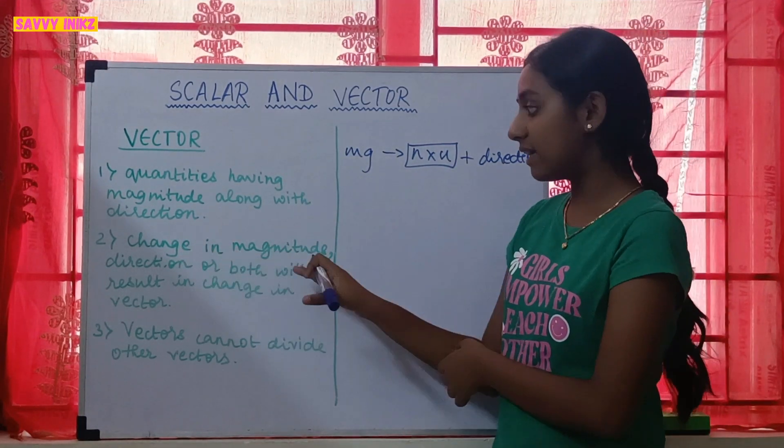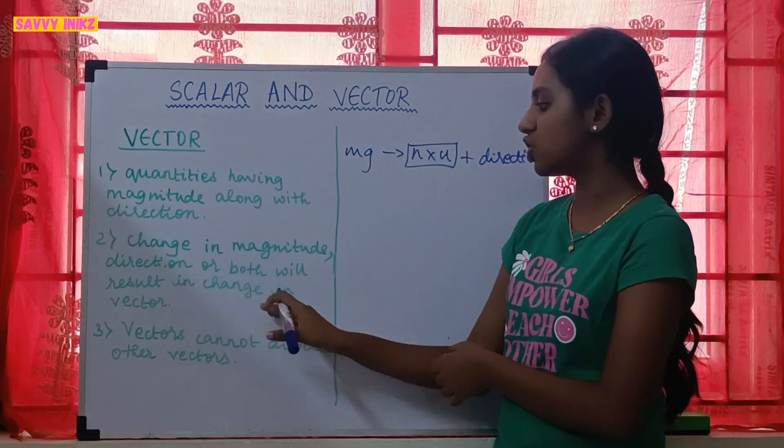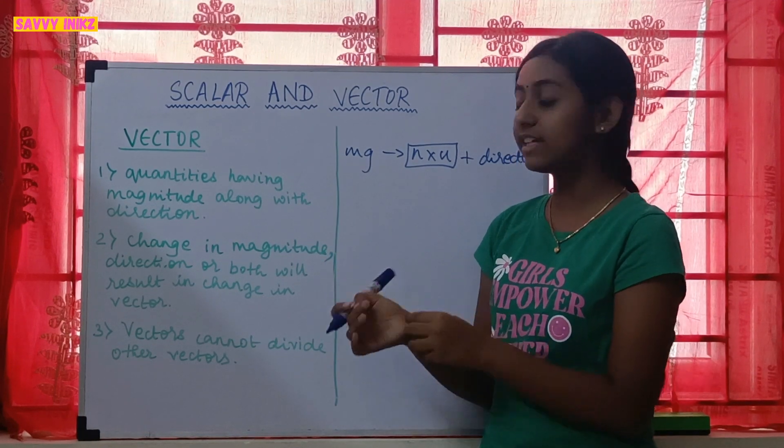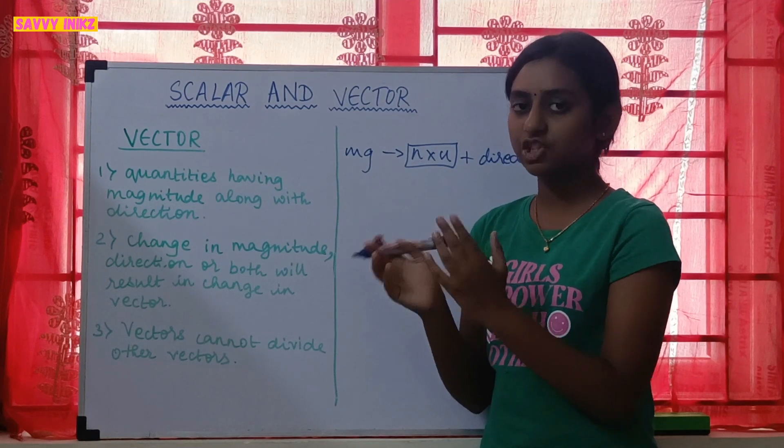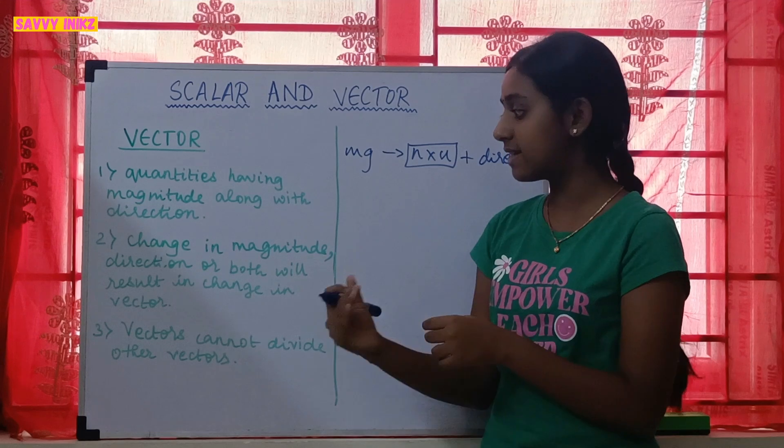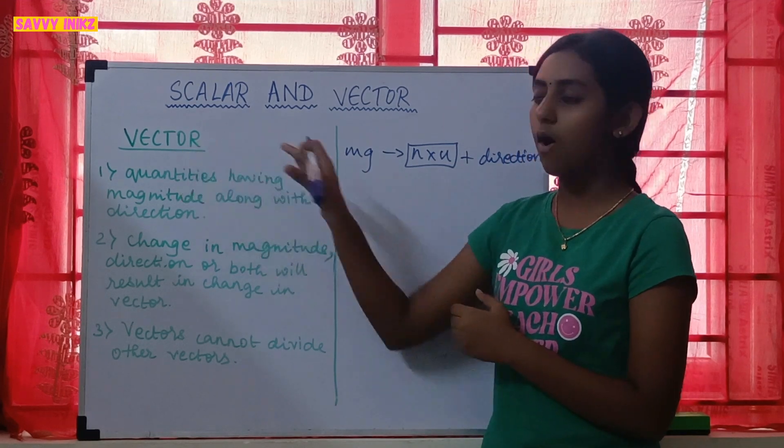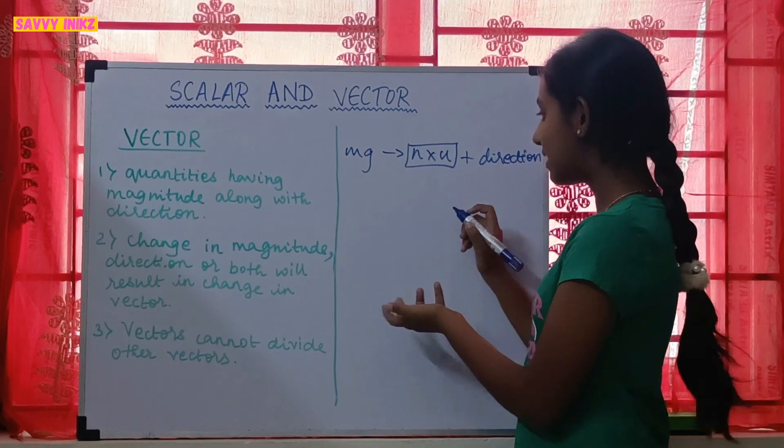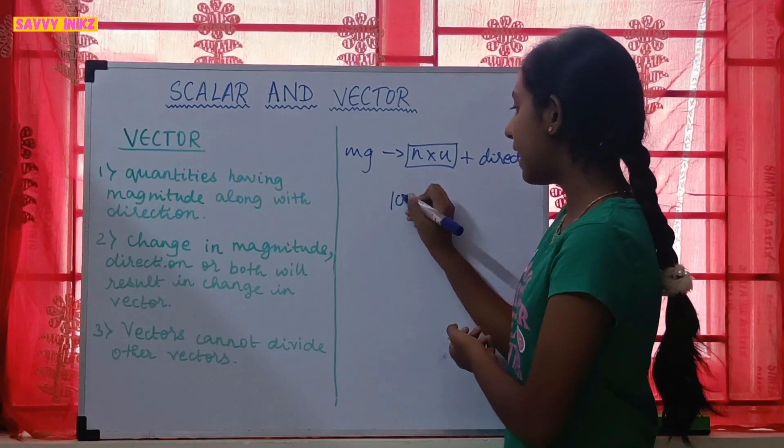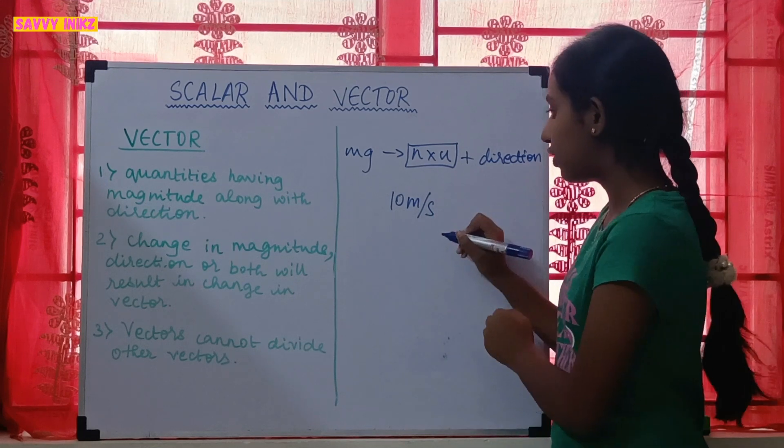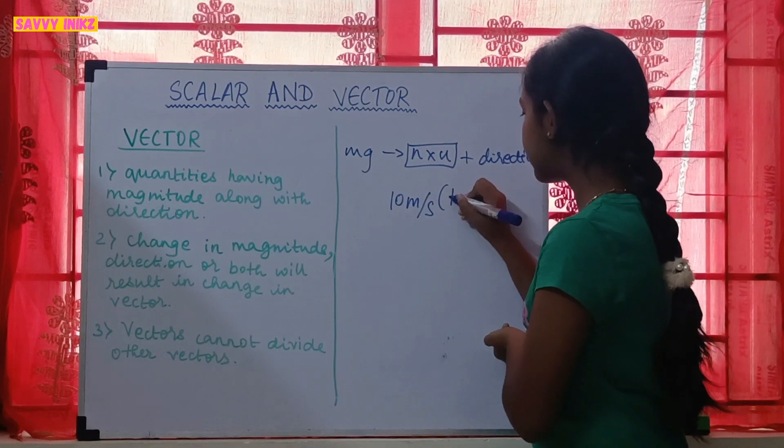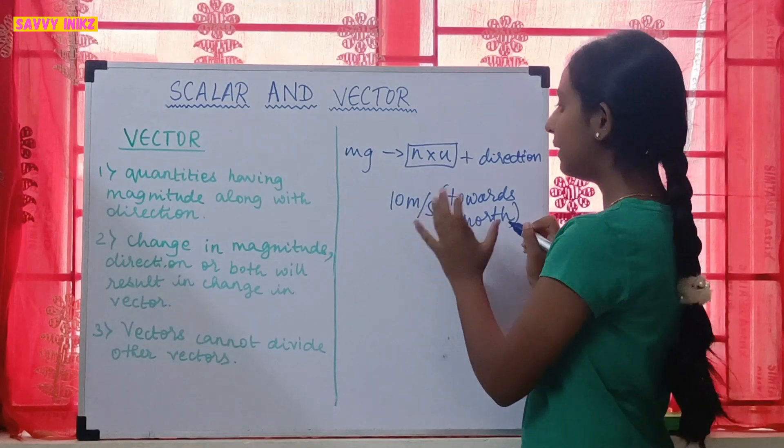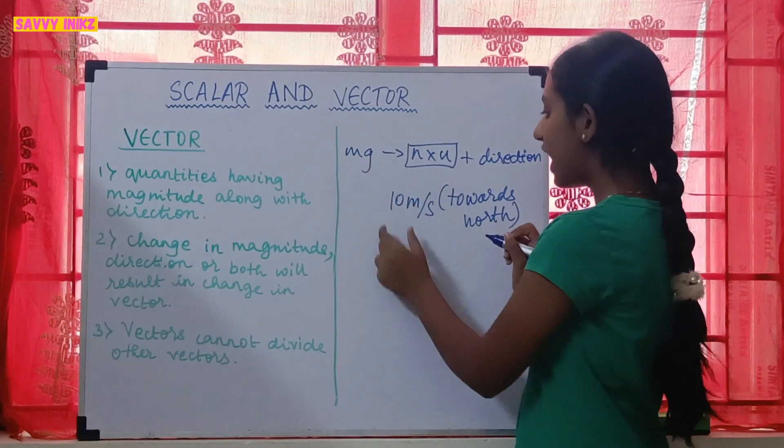So now the change in magnitude, direction or both will result in change in vector. Now what does this mean? In the last video, in the scalar quantities, we learnt that change in magnitude alone will result in change of scalar. But in vector, we have three different things that we can change to change the value of vector quantities. Now let's check them one by one. So we'll take any vector quantity. We'll take velocity. How about we'll take 10 meter per second. And we have to add direction also. So my velocity is going towards north.